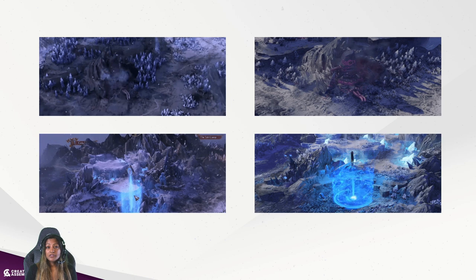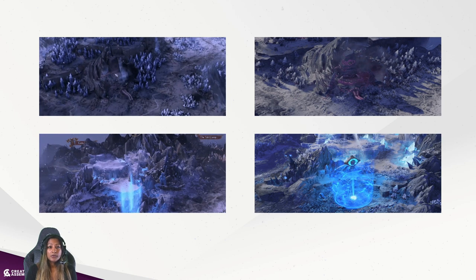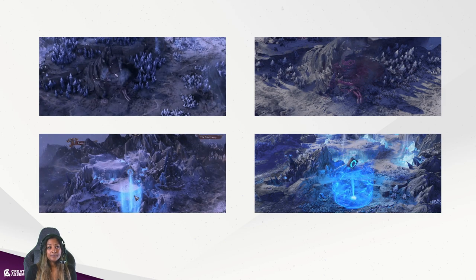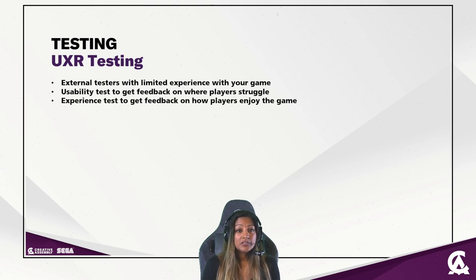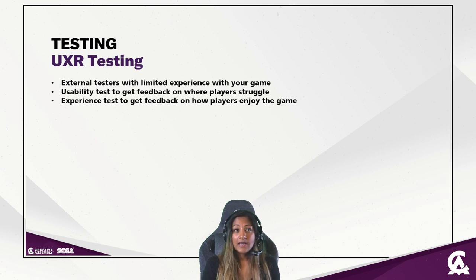Things like these may seem obvious to people working on the game, but are crucial to people who have never seen it before. We were able to catch a lot of these things because of the usability tests. We also carried out experience or sentiment tests where researchers obtained feedback on how much players enjoyed the game, whether the experience matched the intended experience, whether the story made sense, and what players thought about Yuri and his brother. Based on that feedback we made story amendments — for example, players didn't understand why they were going north, so we had to emphasize the goals a lot more.